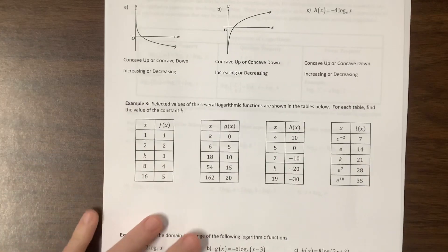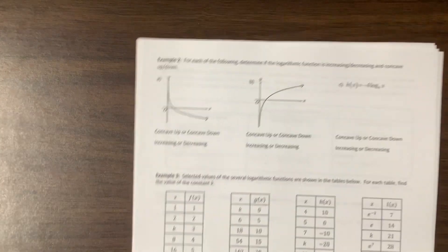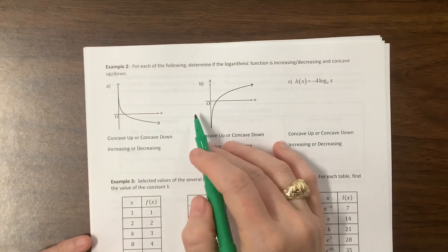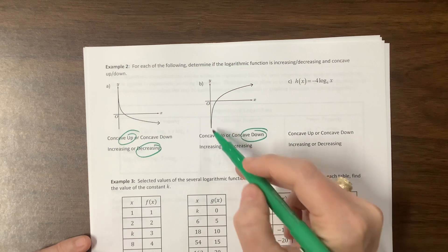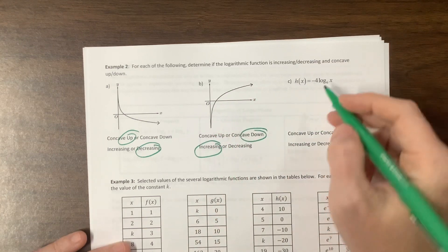Okay, increasing, decreasing, concave up, concave down. So this is concave up. It's decreasing. This is concave down. The values are increasing.